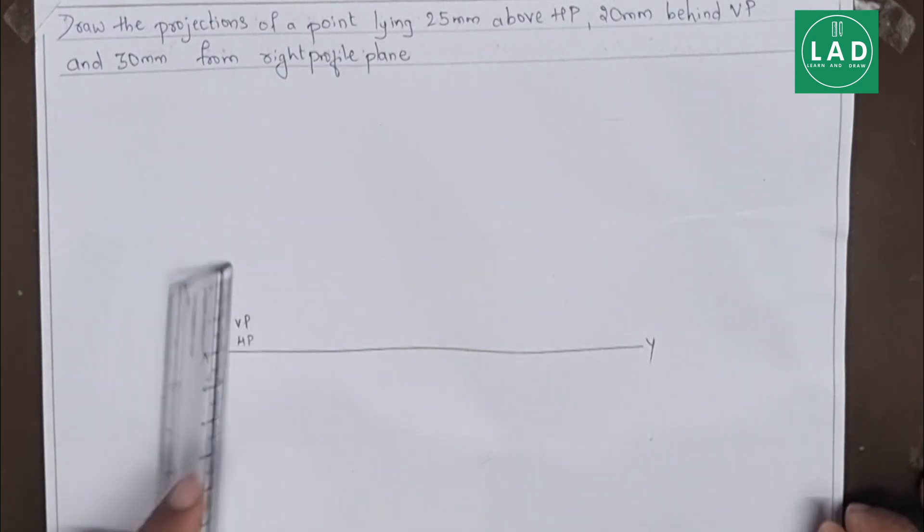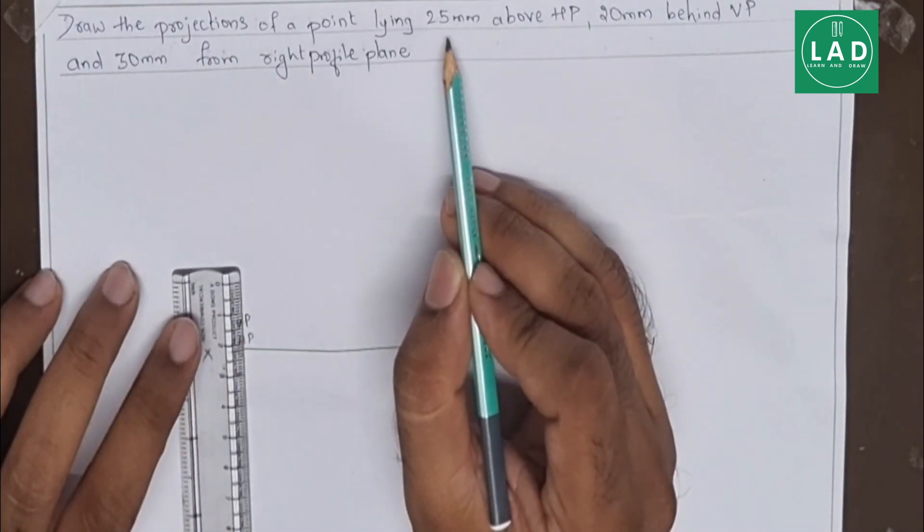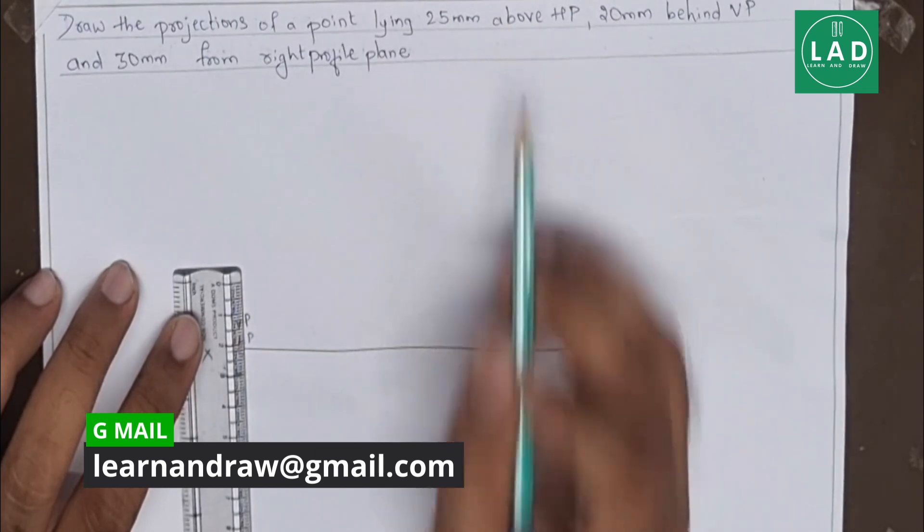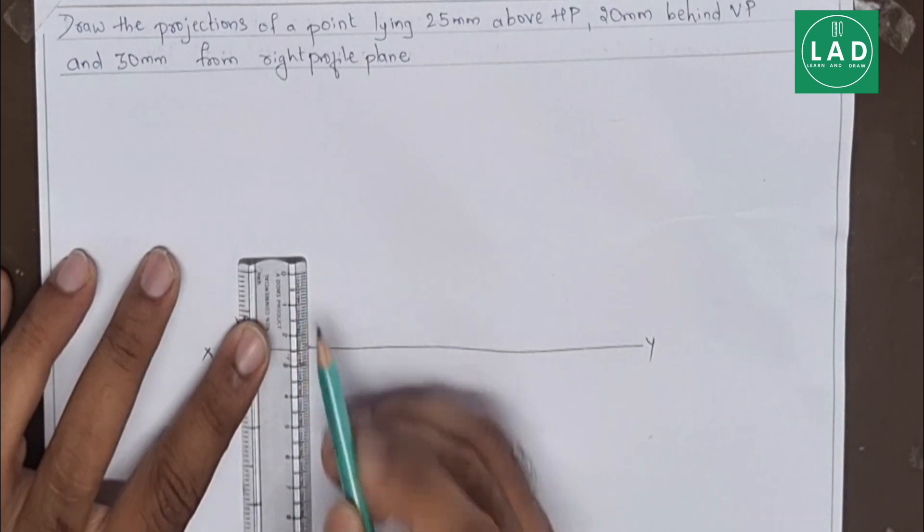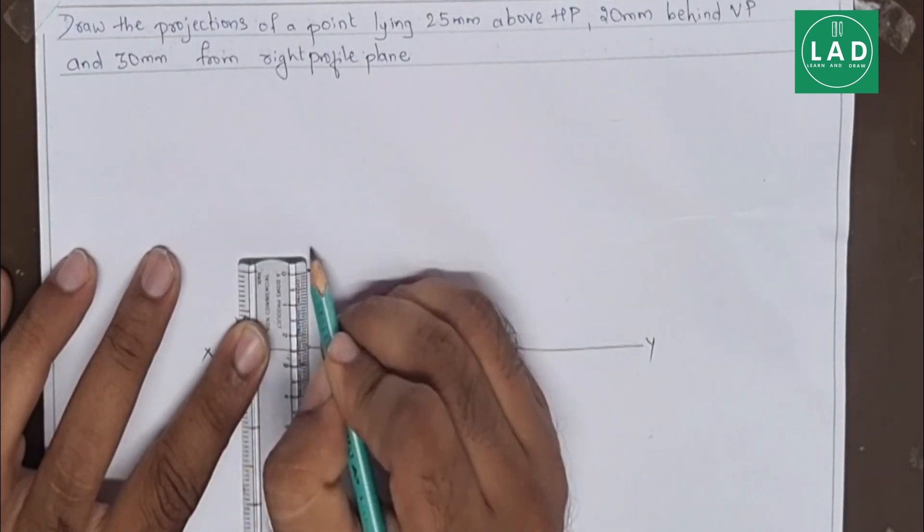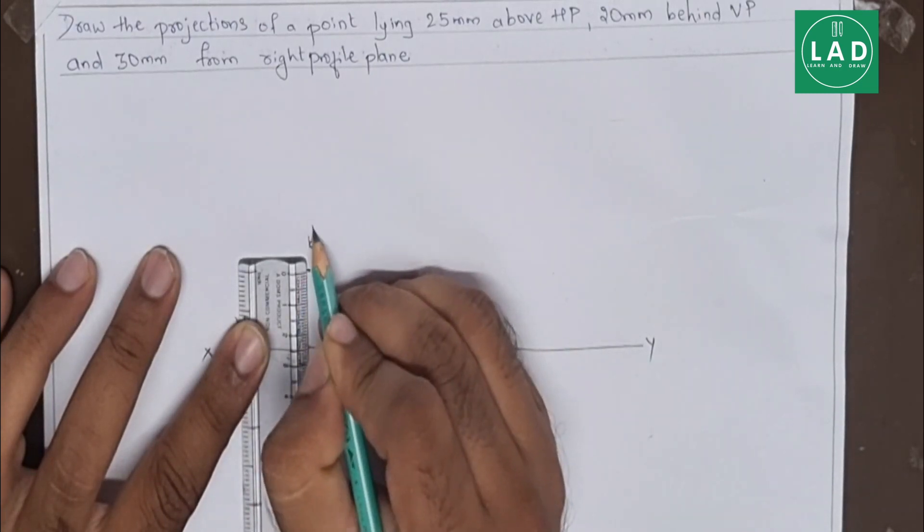First, let's draw the point which is 25mm above HP. Let's mark one point somewhere and name this as B dash.